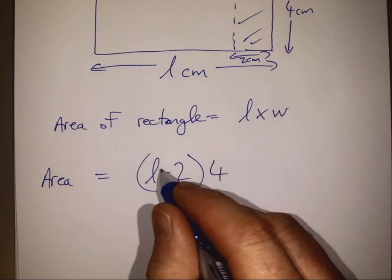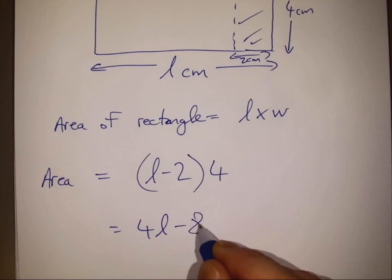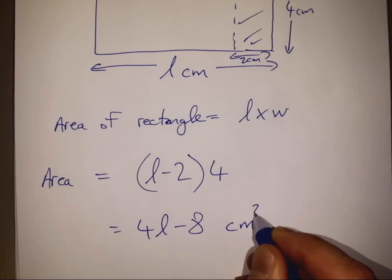So the 4 gets multiplied by the L, and that gives us 4L, and 4 by minus 2 gives us minus 8. That's 4L minus 8, and the units there will be centimeters squared.